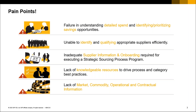There was also a lack of knowledgeable resources to drive process and category best practices, meaning organizations were not able to use the best practices of SAP Ariba Sourcing. Then there was a lack of market commodity information and a lack of operational and contractual information. You might do a contract with a supplier and then forget about it — it's on paper. With SAP Ariba you get the opportunity to go green. These were the few pain points organizations faced before SAP Ariba.